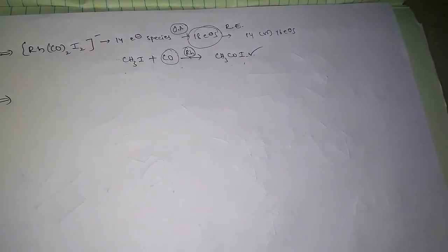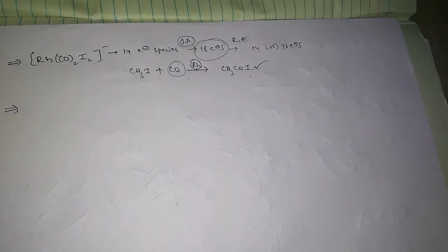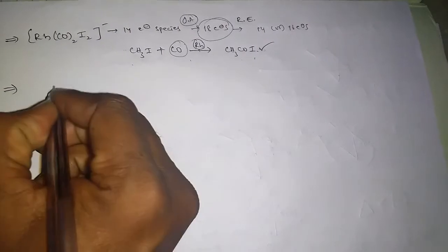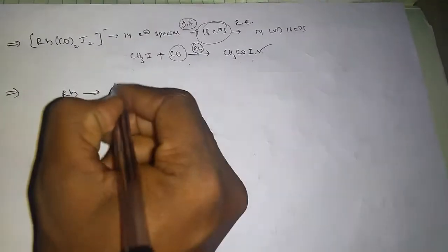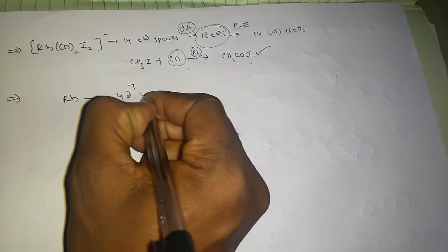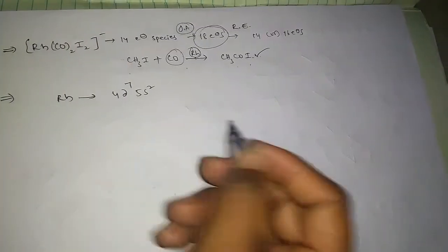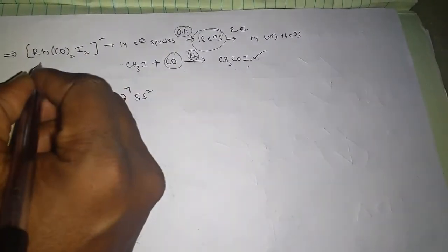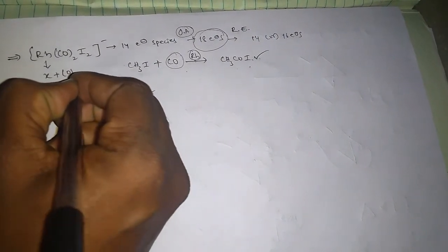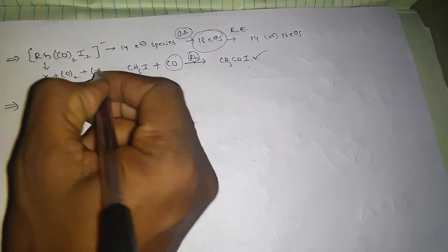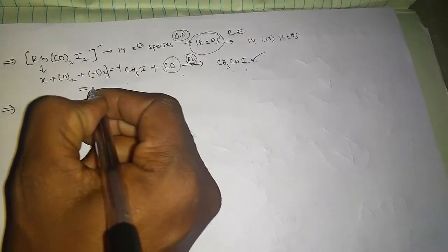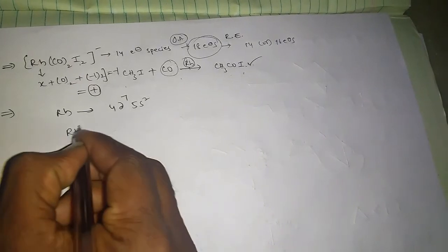Now let's check statement 2: the rhodium complex is diamagnetic in nature. Rhodium has the electronic configuration 4d⁷ 5s². In the given complex, if we consider the phosphine ligands and carbon monoxide as neutral ligands — that's 0 — and iodine as −1, with two of them that gives −2 plus 1 from the overall charge, so rhodium is in the +1 oxidation state. That means it loses one electron, giving a configuration of 4d⁷ 5s¹.